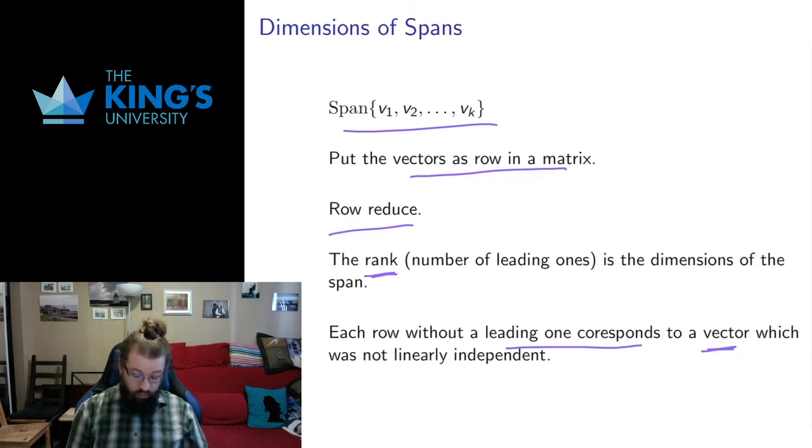A vector that I could have deleted from the span. So say that the second row ended up not having a leading one, that means I could actually get rid of this vector and have exactly the same span. It wasn't contributing to the dimension of the span, it was a redundant vector. So that's the process: put the vectors in as rows, row reduce, look at the rank.